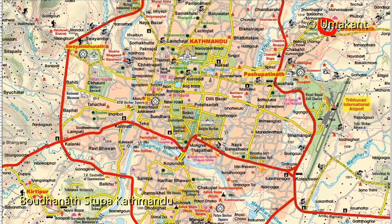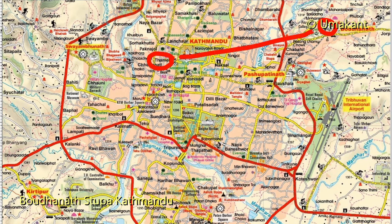This is Boudhanath Stupa, one of the most important tourist attractions of Kathmandu. We were staying in Thamel. If you were staying in a hotel, you were probably staying in and around Thamel. From Thamel to Boudhanath Stupa is about 10 kilometers.